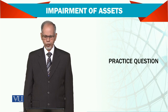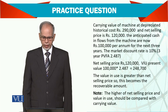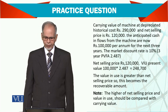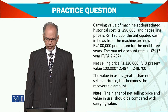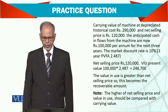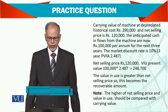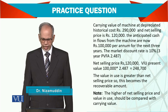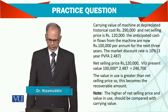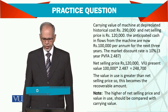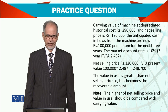Let's see a practical question. There is an asset having carrying value historically depreciated of $290,000. Any cost minus the accumulated depreciation is $290,000, and net selling price is $120,000. The anticipated cash inflow for the machine is $100,000 per annum for the next 3 years.